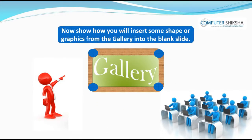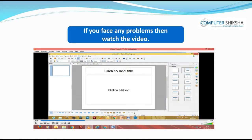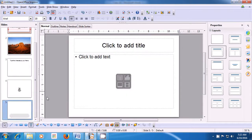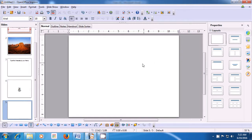Now, show how you will insert some shape or graphics from the gallery into the blank slide. If you face a problem, then watch the video and learn from it. Let us now watch this video and practice the use of gallery to insert pictures in our slide presentation. To insert a picture, we first need a blank slide. So go to the slide pane, click on that and then click on new slide option. Since we want a blank slide to insert a picture, go to the layouts and click on blank slide layout. Now to insert a picture, take the pointer to Tools and select the gallery option.